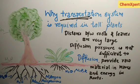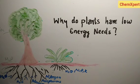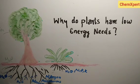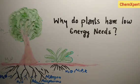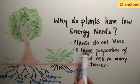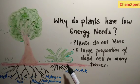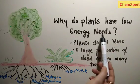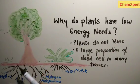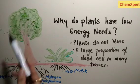The next question is: why do plants have low energy needs? Energy needs differ with different body designs. Humans have different energy needs, plants have different energy needs. Plants do not move, and plant bodies have a large proportion of dead cells in many tissues. Due to these two reasons, plants have low energy needs and a very slow system can also transport water and food to different parts.